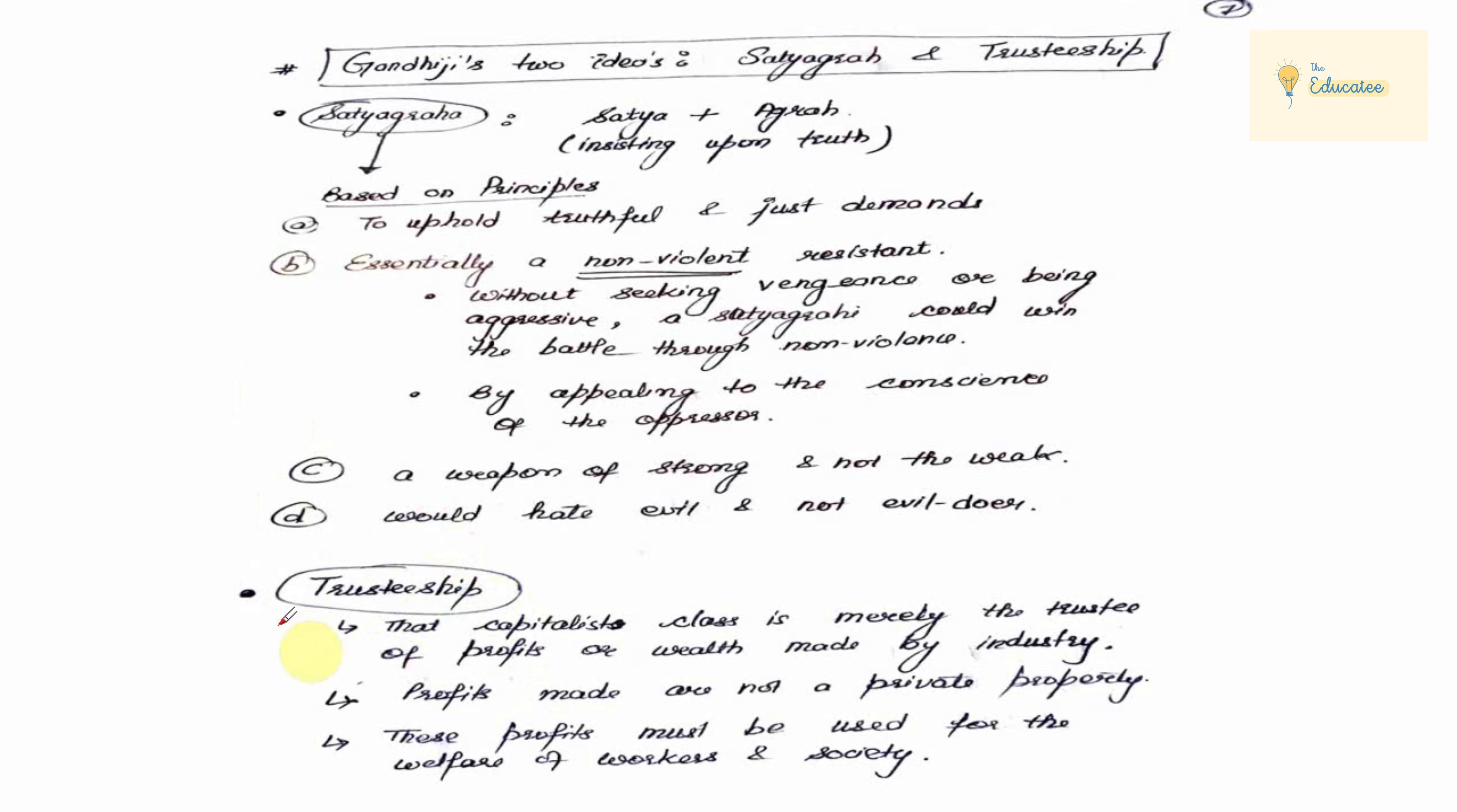The second idea of Gandhi Ji was Trusteeship. What does Trusteeship mean? The capitalists and industrial people have the wealth, they are trustees, it's not their personal wealth. Why? Because workers have created everything.